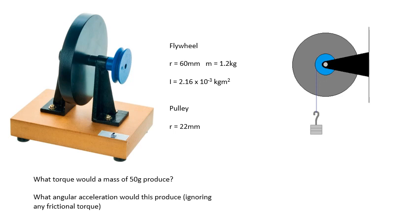Let's have a go at a couple of questions. So first of all, here's our flywheel, and there's its radius, and there's its mass, its moment of inertia. There's the radius of the pulley. So what torque would a mass of 50 grams produce, and what angular acceleration would this produce, ignoring any frictional torque? Now, there will always be some frictional torque with a pulley like this, but ignoring that, what would your angular acceleration be?